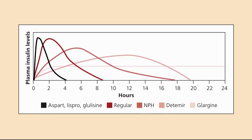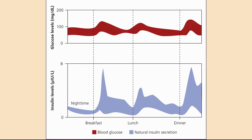Now let's apply this. This chart shows what normally happens throughout the day as you eat breakfast, lunch, and dinner — we're not counting snacks. Your insulin secretion goes up after each meal, but you always have this sort of basal level; you never have zero insulin in your blood. This means it's able to regulate glucose level throughout the day, whether you're fasting or after you eat. Ideally, with insulin regimens, we want to try to mimic this as much as possible.